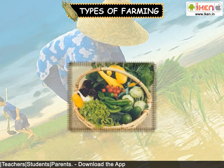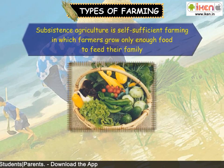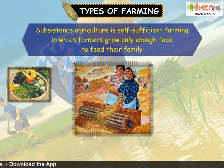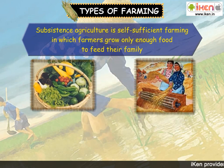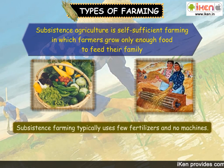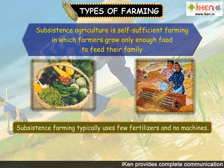Types of farming — Subsistence agriculture: Subsistence agriculture is self-sufficient farming in which farmers grow only enough food to feed their family. Subsistence farming typically uses few fertilizers and no machines.